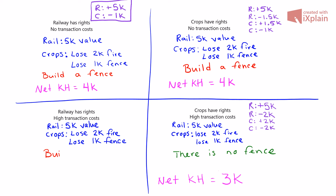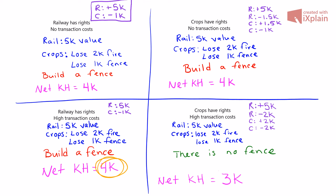So what outcome do we get when the railway has the right? In this case, the crop owners say they'll just face the $1,000 cost and build a fence. The distributional consequences are the rail owner gains $5,000 and the crop owner loses $1,000. The net value of social resources from this situation is $4,000.